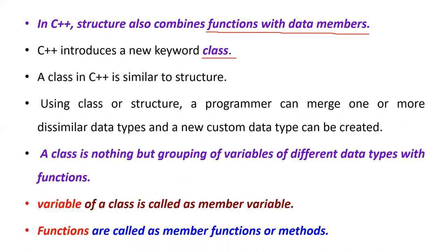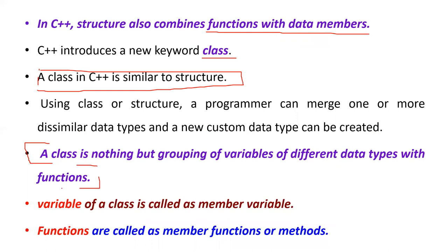A class in C++ is similar to a structure in C language. Using the class structure, a programmer can merge one or more dissimilar data types, and a new custom data type can be created. A class is nothing but the grouping of variables of different data types with functions. This is the definition of a class.